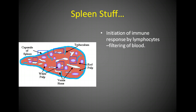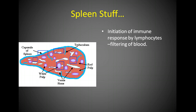The spleen can initiate an immune response. You can think of it as filtering the blood. You can live without a spleen, though it's helpful to have one. One of the dangers of the spleen is that because it has such a large blood supply, if it's damaged the person can actually internally bleed to death if the damage is not caught quickly enough.